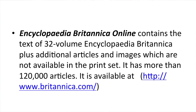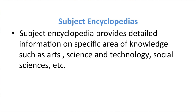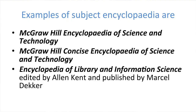Subject encyclopedias provide detailed information on specific areas of knowledge such as arts, science and technology, and social sciences. Examples of subject encyclopedias are McGraw-Hill Encyclopedia of Science and Technology, McGraw-Hill Concise Encyclopedia of Science and Technology, and Encyclopedia of Library and Information Science, edited by Alan Kent and published by Marcel Dekker.